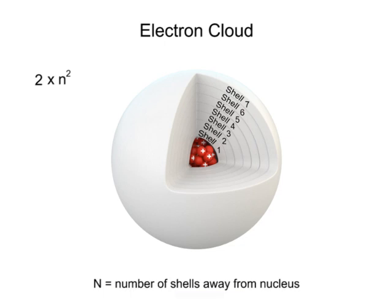To calculate the number of electrons in the first shell, you would use the equation 2 times 1 squared, which is 2 times 1, or 2 electrons.